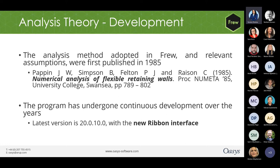Fru was originally developed based on a paper named 'Numerical Analysis of Flexible Retaining Walls' by Papin et al., published a number of years back. However, the current version Fru 20.0 build 10 is quite different from the original one. It is much more advanced and has quite a number of extra and useful features, and it also has a brand new ribbon interface which is convenient and user-friendly.